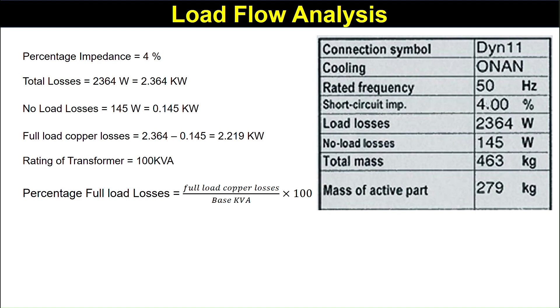Percentage full load loss is equal to full load copper loss divided by base kVA. The full load copper loss is 2.219 divided by 100 into 100, it equals 2.219 percent, that is the percentage R.